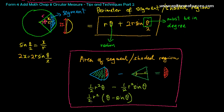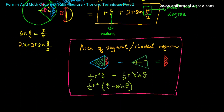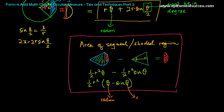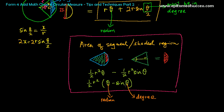Something else to take note of again: this theta must be in radian, and the theta inside the sine must be in degree, because there is a sine before it. Unless your calculator is in radian mode. If you keep your calculator in degree mode, please remember to convert the first theta to radian manually, and let the theta inside sine remain in degree — even though they represent the same angle, one must be in radian and the other in degree.